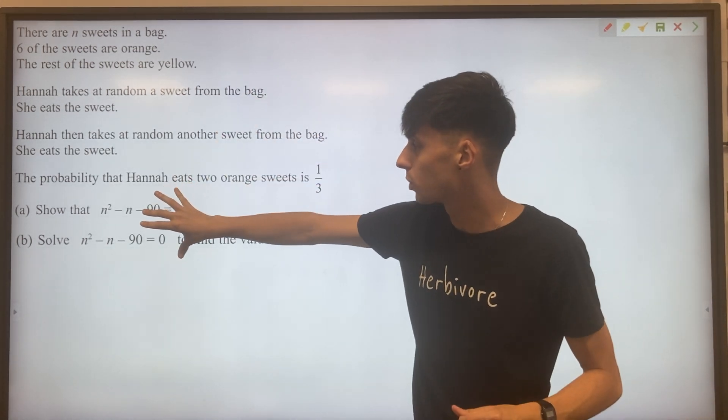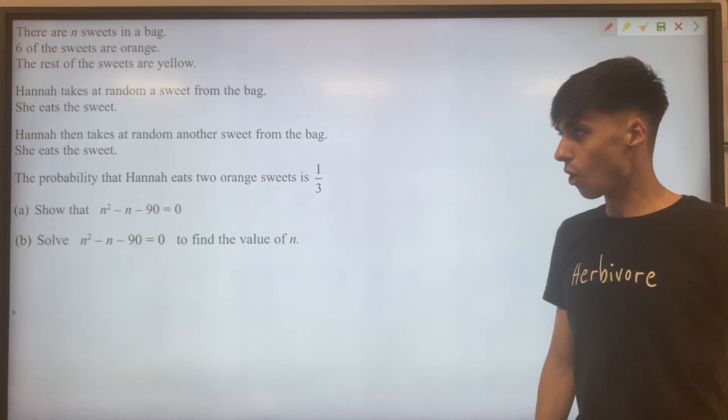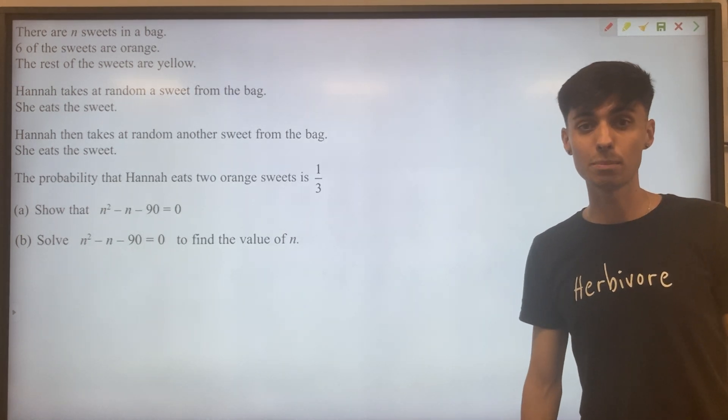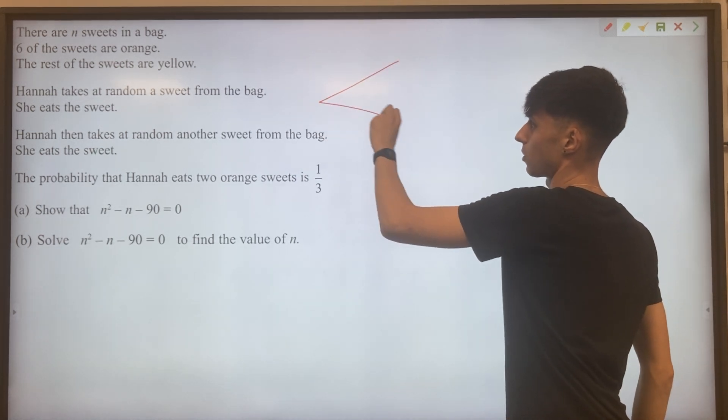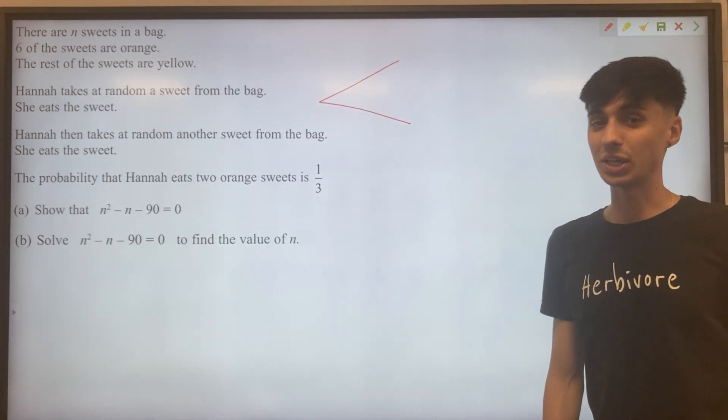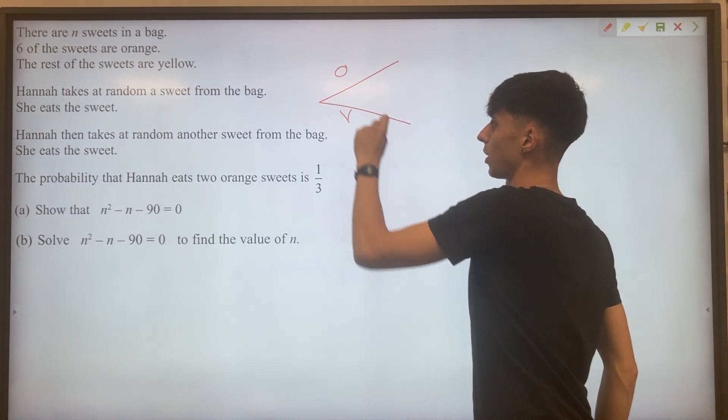And we want to show this quadratic is true in a moment. Let's start off then with drawing a tree diagram to represent this situation. So first branch of the tree, Hannah can either choose an orange sweet or a yellow sweet. Orange, yellow.